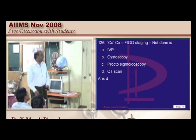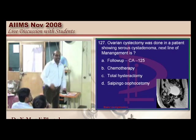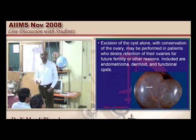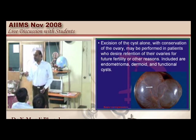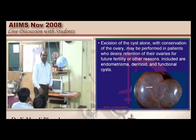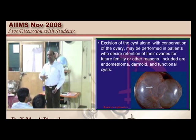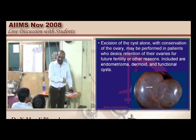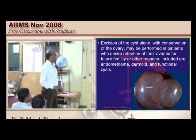For carcinoma cervix, CT scan is not done as part of staging according to FIGO criteria. After ovarian cystectomy where a serous cystadenoma is found, which is a benign condition, only follow-up is sufficient. However, serous cystadenoma discovered on one side has bilaterality — the other side may also have it — so close follow-up is needed.